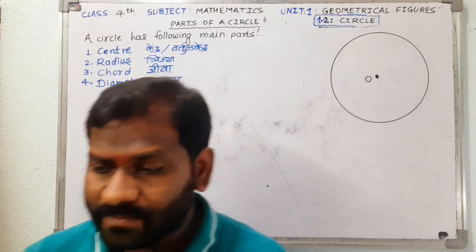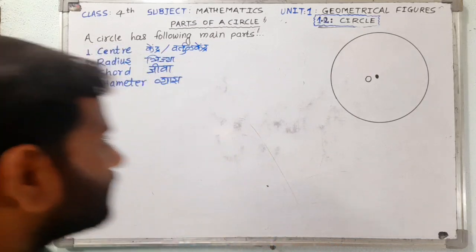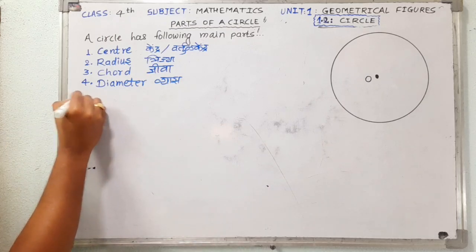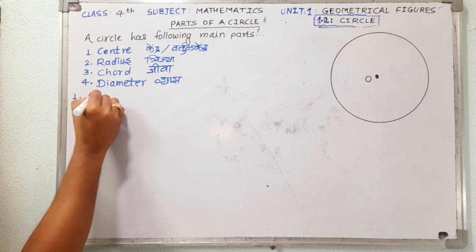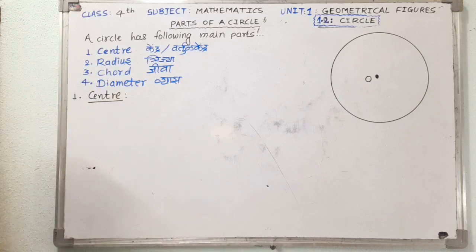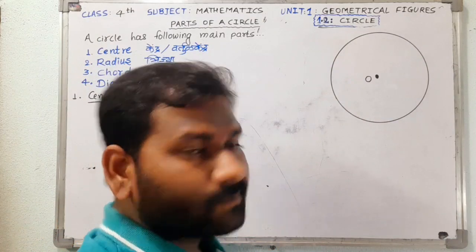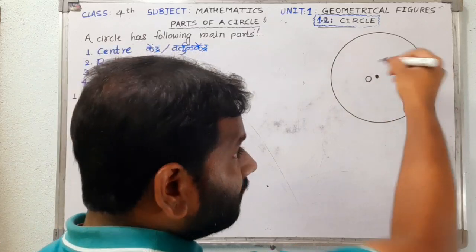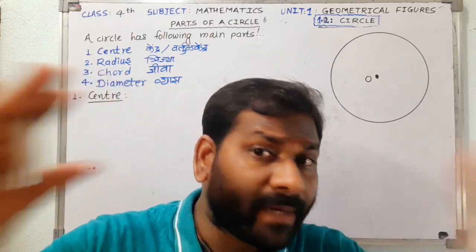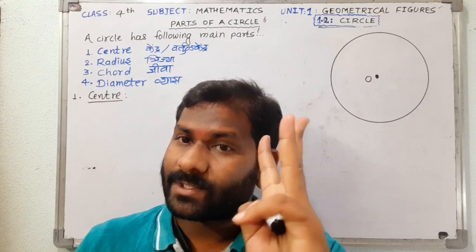Let us begin with the first part of a circle — that is the center. I have drawn a complete circle, and in that circle there is a point which is located at the most middle portion of the circle.